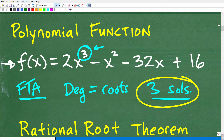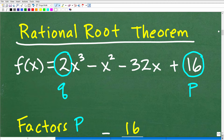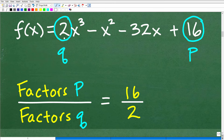Let's continue on with the rational root theorem. It will generate a list of numbers such that any rational roots this particular function has will be amongst those numbers. The first step is to make sure our polynomial is in standard form — highest to lowest power. You can see: x³, x², x, and then our constant. We're going to identify the leading coefficient, which is 2 — the number in front of the highest power — and label that as q. Then we'll take our constant number, 16, and label that as p.